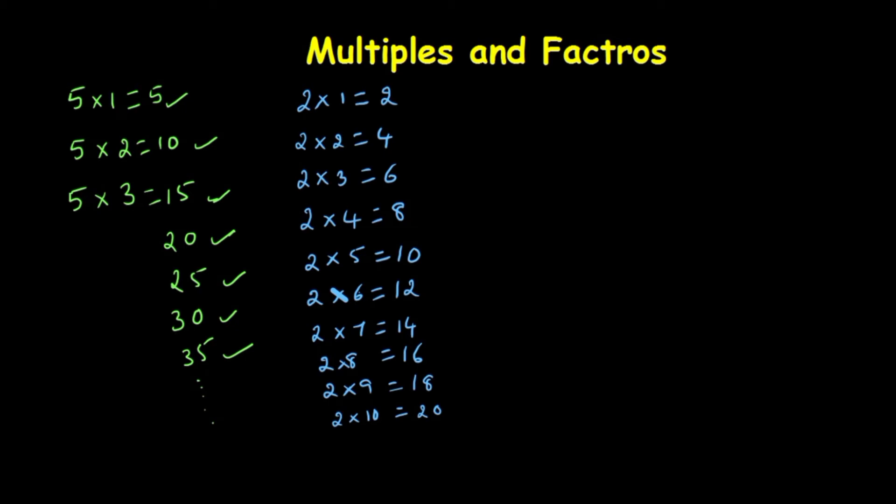These all are the multiples of 2. And here's one important point: these multiples of 2 are all called even numbers.